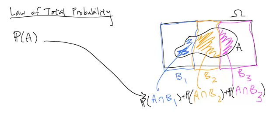when we have B1 up to Bn that forms a partition, that means that B1 through Bn don't overlap. So you see these pieces are disjoint. And also they cover the entire sample space omega.